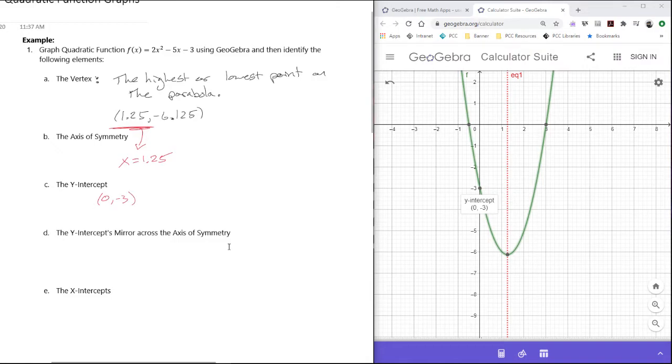To find the y-intercept's mirror across the axis of symmetry, I'm going to look straight to the right from the y-intercept over here, and this point is where we're looking. I'm not exactly sure what that is. The x-value is a little bit tough to see here.